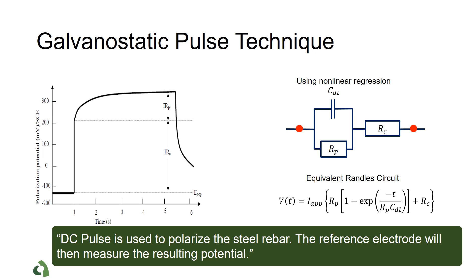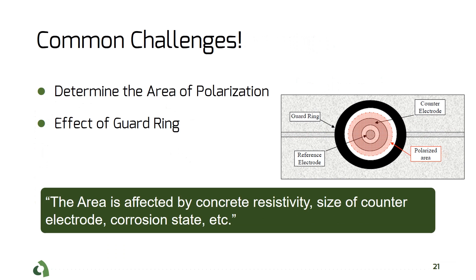Access to the rebar is essential for the electrical connection of the instruments that use this technique. The potential is measured by a reference electrode located at the center of the probe, and the current is applied through a counter electrode placed around the reference electrode.